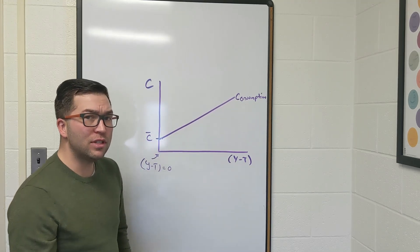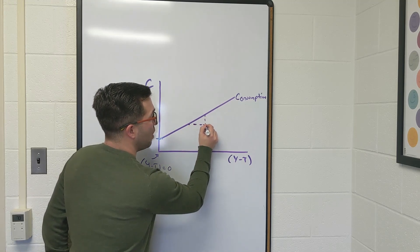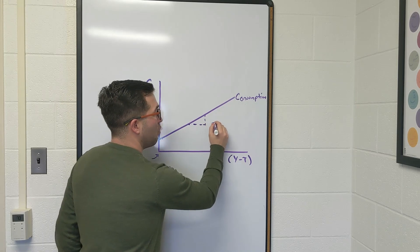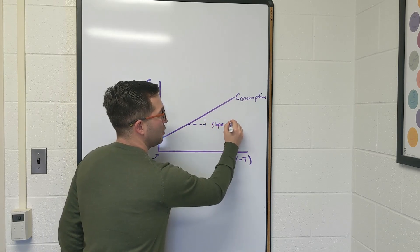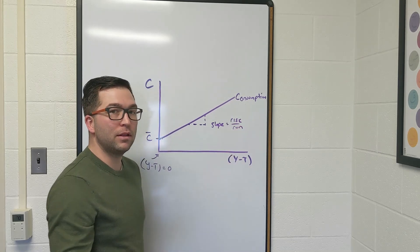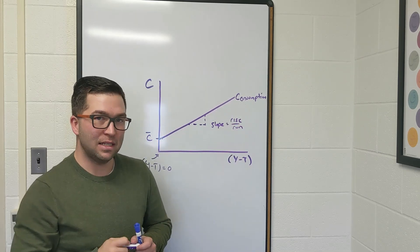We also are interested in the slope. So the slope is going to be rise over run. My slope is always equal to the rise divided by the run. That's what you probably learned in one of your early algebra classes.